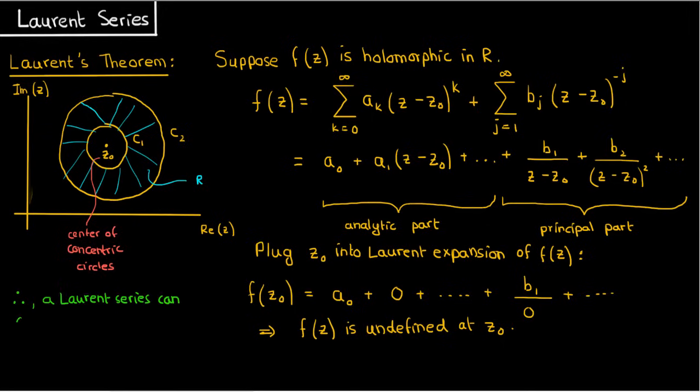That means I'm capable of capturing isolated singularities in the Laurent series of a complex function, and this is what separates a Laurent series from a Taylor series, because for a Taylor series, you only got a polynomial, and you could only center that polynomial around a point where the function was continuous and differentiable.